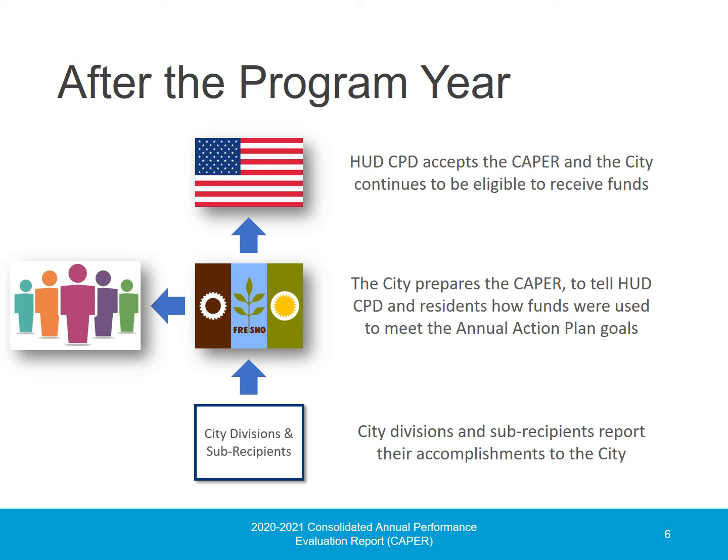Throughout the program year, and especially at the end of the program year, the City divisions and non-profit sub-recipients who received funding report how they spent their HUD CPD funds and their accomplishments to the City. The City then collects all the information into a single performance report called the CAPER. The City Council approves the CAPER after the public has been invited to comment on it. This public opportunity is required by HUD and ensures the City's activities are transparent. Once approved, the report is submitted to HUD, which is a requirement for the City to continue to receive funding.